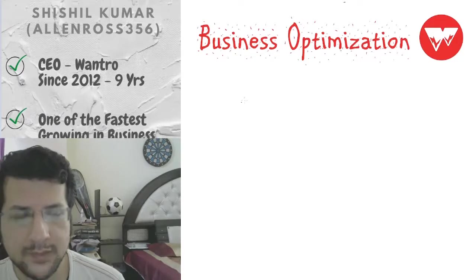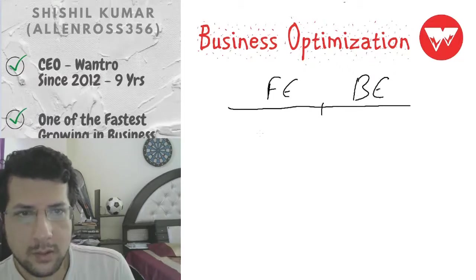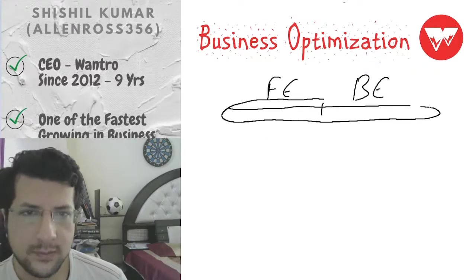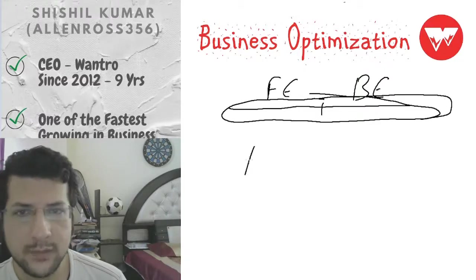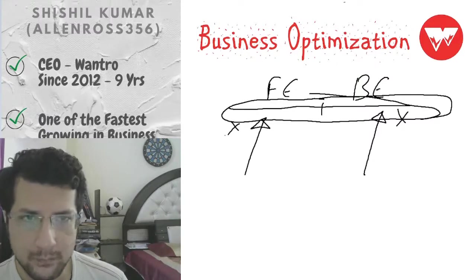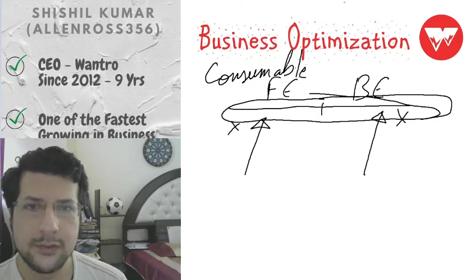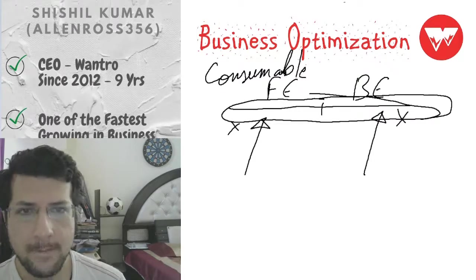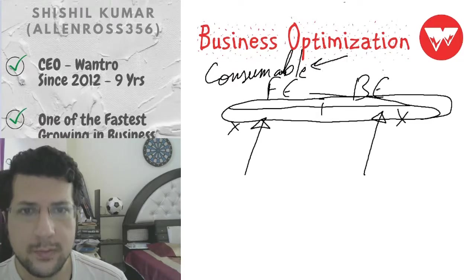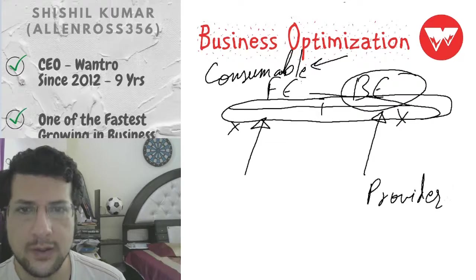What happens with a consumable? Business has two parts: front-end and back-end. You need to focus on all parts to build a good business. If you are just focusing on the front-end, you are neglecting the back-end, and vice versa — and you cannot focus on both simultaneously. When you are selling a consumable, initially you are delivering the consumable through another seller or provider, while you take care of the front-end side yourself.